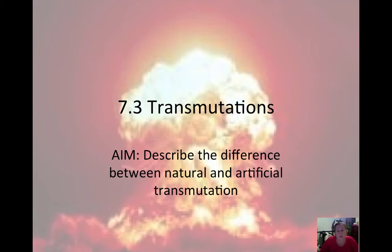Hello, welcome back to section 7.3 of our Nuclear Chemistry Notes. This is part 7.3, Transmutations, and the aim for today is to describe the difference between natural and artificial transmutation.